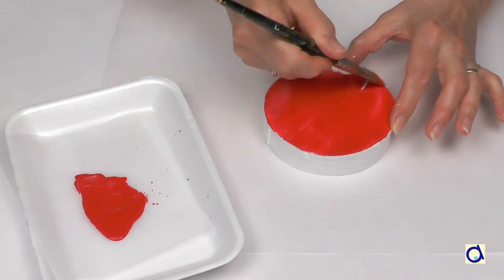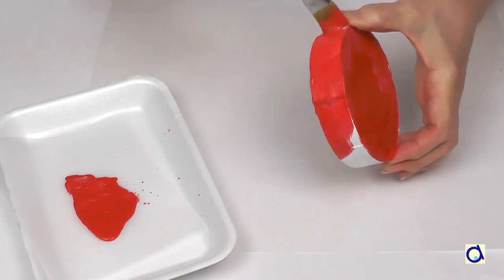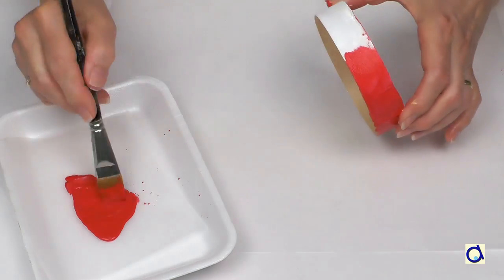Next, paint the top and the side of the box in red. For best results, apply a second coat of paint and let dry.